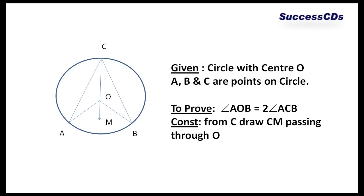Now the same arc AB subtends angle ACB when point C lies on the circle. Therefore, to prove we have here: angle AOB is equal to twice angle ACB. Now what we do in construction here: from C, we draw CM passing through our center O.